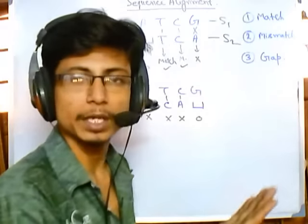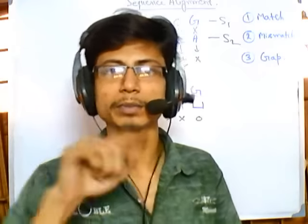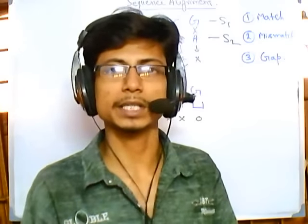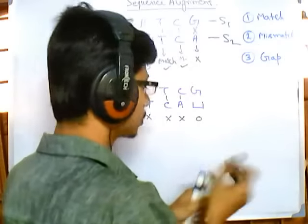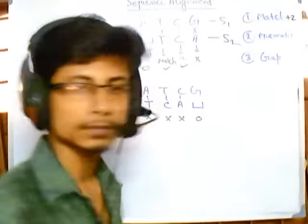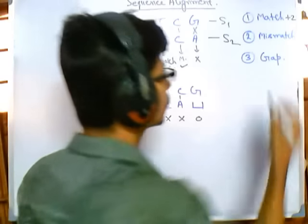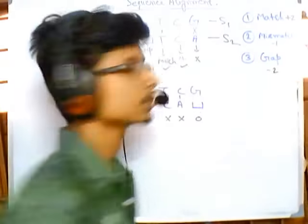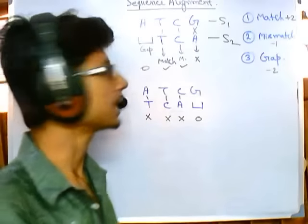Think of it like an exam: if you correctly answer a question you get plus 2. If you make a small mistake — a mismatch — you get minus 1. If you don't attempt the question at all — a gap — you get minus 2. So: match gives plus 2, mismatch gives minus 1, and gap gives minus 2. This is the scoring system used to evaluate the result of an alignment.